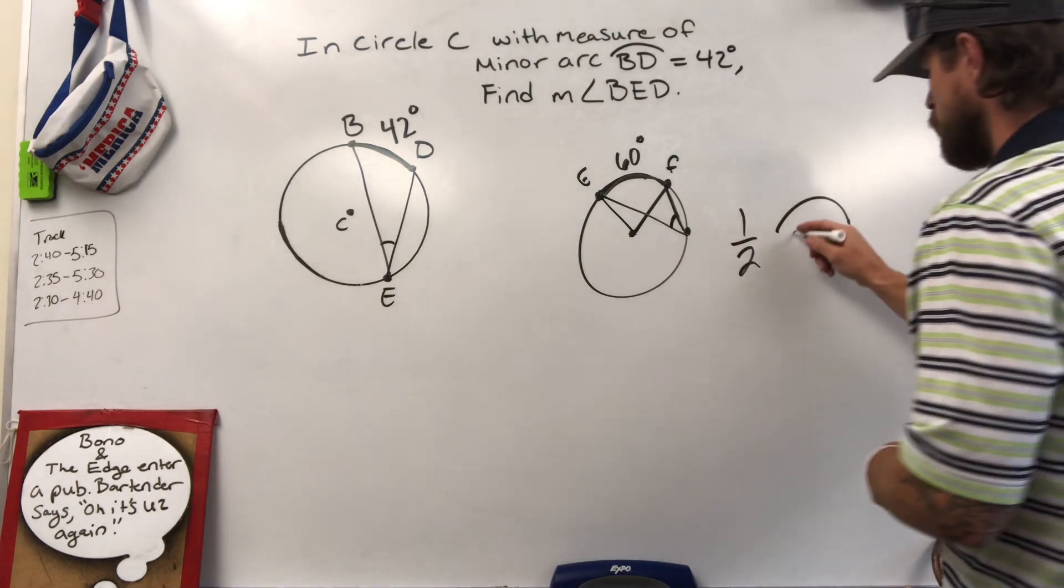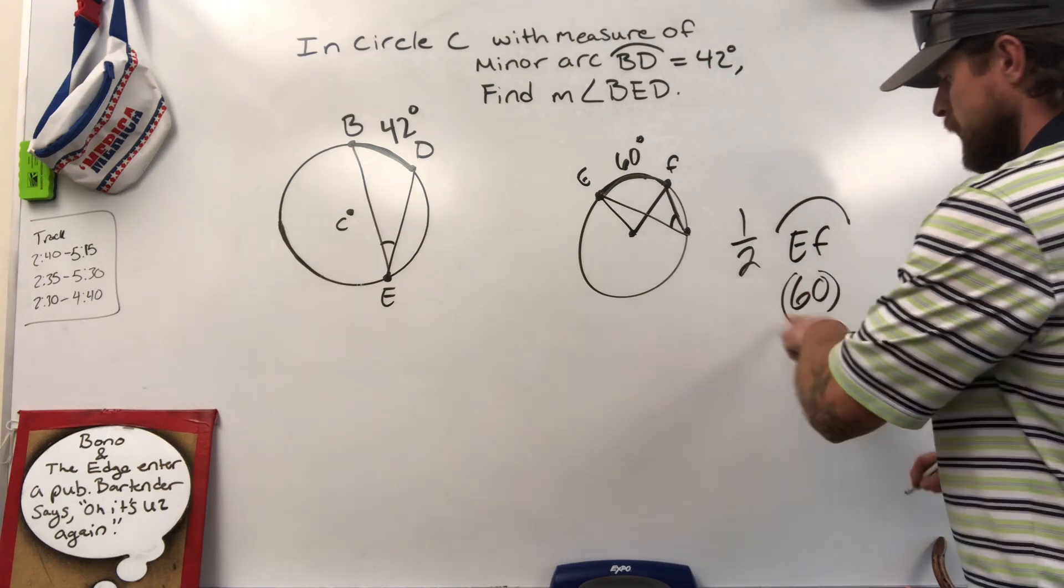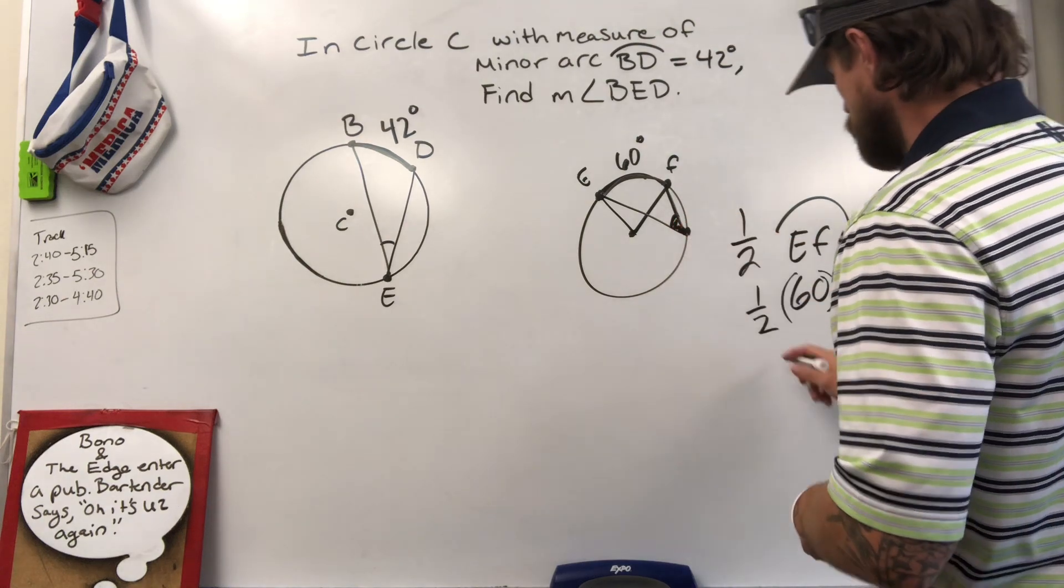So in this case, it's our EF, which is a 60, and all we got to do is cut that in half, and this angle here would be 30.